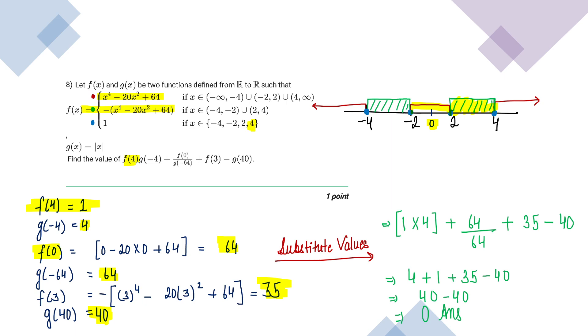We got all the values of this big expression. Let's substitute. So this is f of 1, g of minus 4, f of 0, g of minus 64, f of 3 and g of 40. Solve it and you will get the answer as 0. Simple.